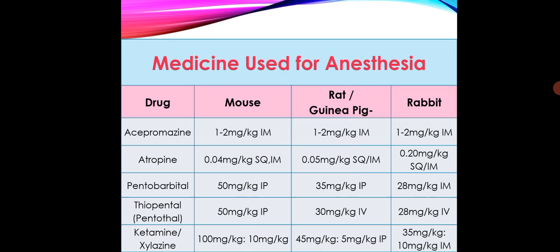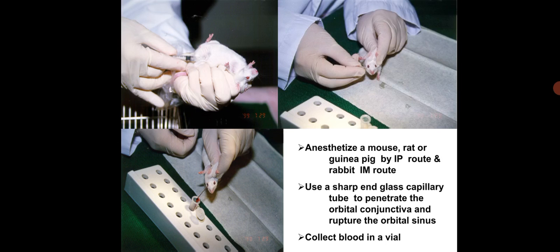The following medicines can be used for anesthesia at appropriate concentrations. Anesthetize the mouse, rat, or guinea pig by intraperitoneal or intramuscular route. Use a sharp glass capillary tube to penetrate the orbital conjunctiva and rupture the orbital sinus. Collect blood in a vial.